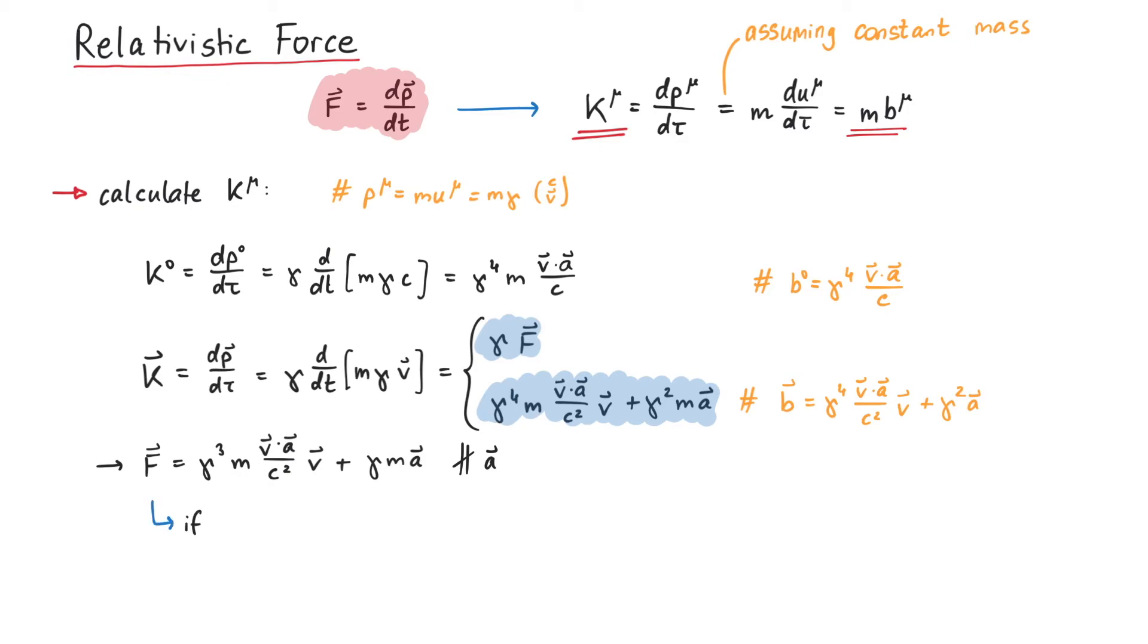If the 3-velocity and the 3-acceleration of an object are parallel, then we can simplify the 3-force to gamma cubed times mass times acceleration, so the force is parallel to the acceleration.